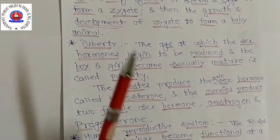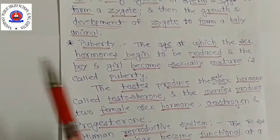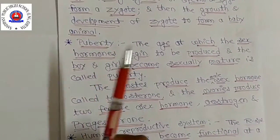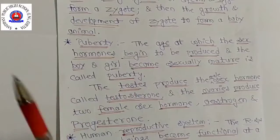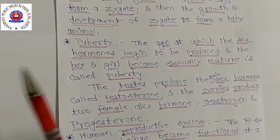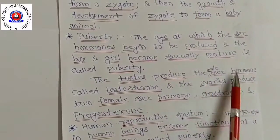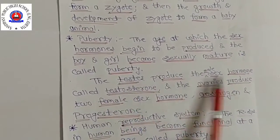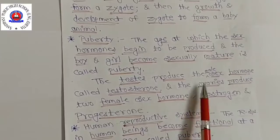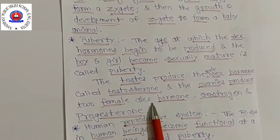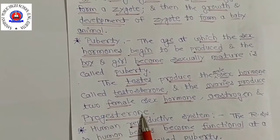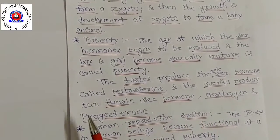The testes produce the male sex hormone called testosterone. Ovaries are present in the female body and produce two female sex hormones called estrogen and progesterone.